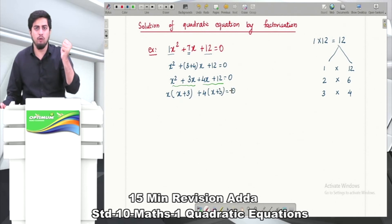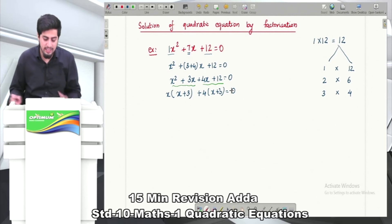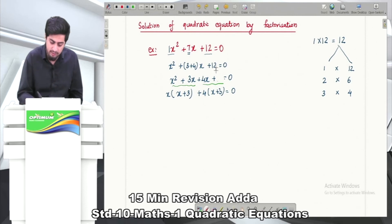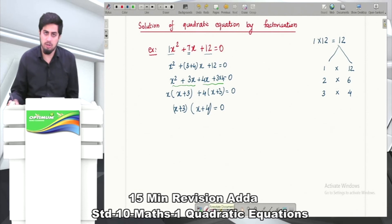I can also write 12 as 3 × 4. When I take 4 common, inside remains 3. Now you can see x + 3 appears twice. Taking x + 3 common, we have (x + 3)(x + 4) = 0. In this way, we have solved our quadratic equation - well, not completely solved, but factorized.